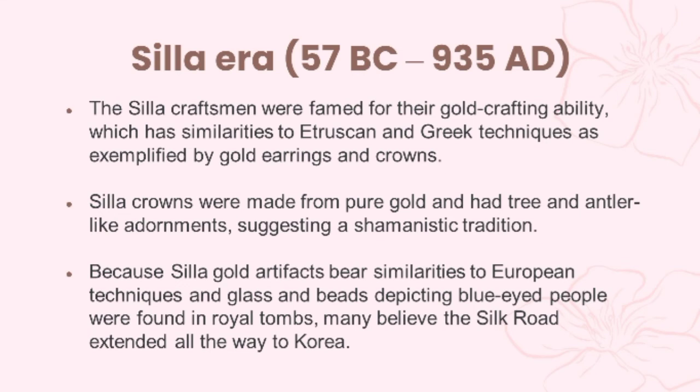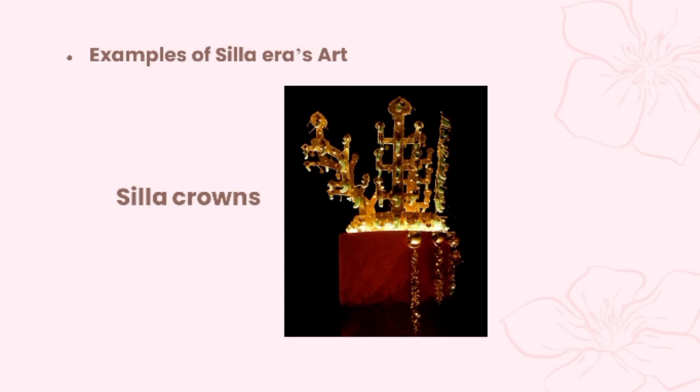The Silla craftsmen were famed for their gold-crafting ability, which has similarities to Etruscan and Greek techniques as exemplified by gold earrings and crowns. Silla crowns were made from pure gold and had tree and antler-like adornments, suggesting a shamanistic tradition. Because Silla gold artifacts showed similarities to European techniques, and glass beads depicting blue-eyed people were found in royal tombs, many believed the Silk Road extended all the way to Korea.